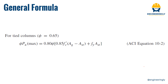Step one is understanding the general formula from ACI 318. Formula 10.2 gives us the maximum nominal load times phi, where phi is 0.65 for tied columns and 0.75 for spiral columns. This means that if the stirrups are connected in a spiral way, the compressive strength of the column will be higher compared to a tied column where the stirrups are installed in a non-spiral way.